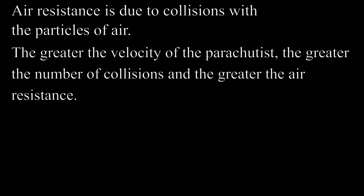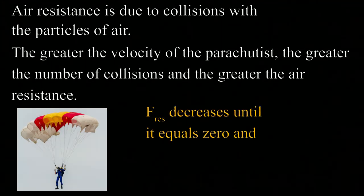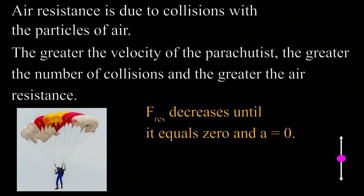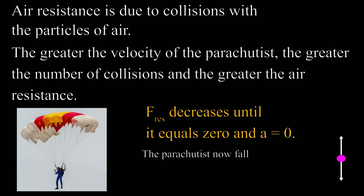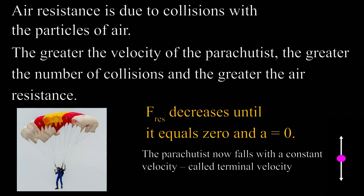Air resistance is due to collisions with particles of air. The greater the velocity of the parachutist, the greater the number of collisions, and therefore the greater the air resistance. Eventually the upward force of air resistance and the downward force of gravity become equal, so the parachutist falls at a constant velocity — terminal velocity.